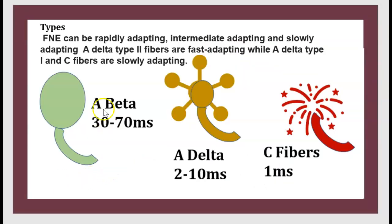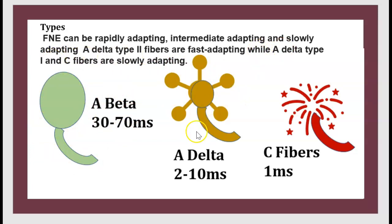There are many types of free nerve endings. Free nerve endings can be rapidly adapting, intermediate adapting, and slowly adapting. A-delta type 2 fibers are fast adapting, while A-delta type 1 and C fibers are slowly adapting.